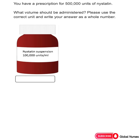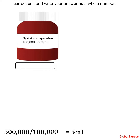The next question: you have a prescription for 500,000 units of nystatin. What volume should be administered? Please use the correct unit and write your answer as a whole number. The suspension is 100,000 units per ml. So it's 500,000 divided by 100,000, giving us 5 ml.